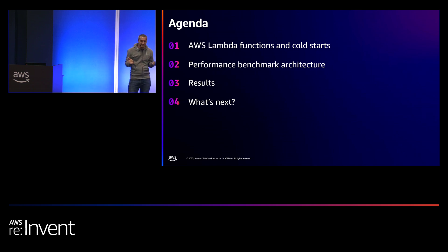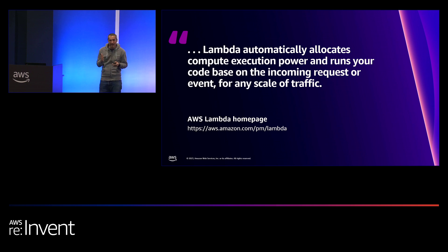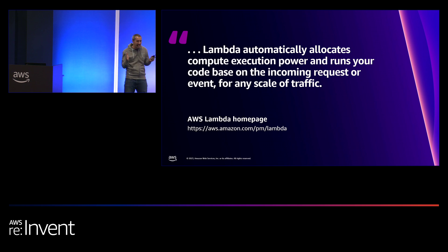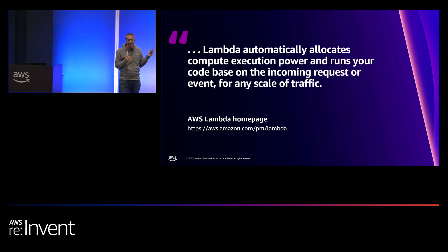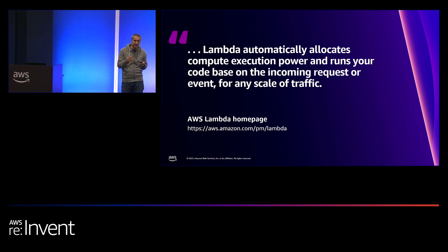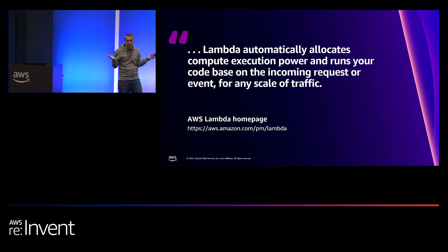I'll stick with the AWS Lambda definition: it basically automatically allocates compute and execution power and runs your code. What's really important is it's event-based. You need an event to trigger a Lambda function — it can be an S3 event when you put an item in a bucket, an HTTP event, or an EventBridge event. There are a lot of different options, but you need an event.